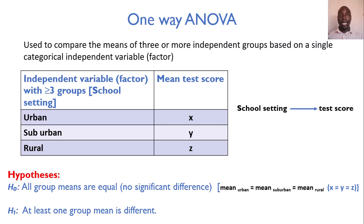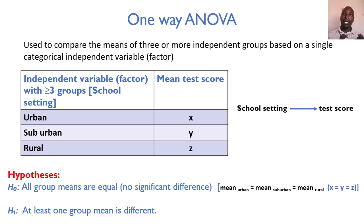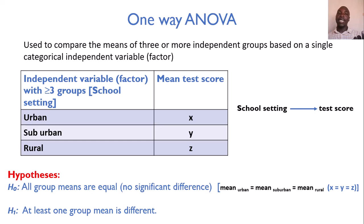The alternative hypothesis tells us that there is a statistically significant difference. So that is what one-way ANOVA does — you have one independent categorical variable with more than two groups (urban, sub-urban, rural) versus a numerical outcome, here the test score of the participants.